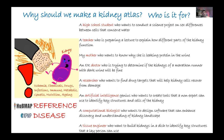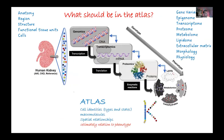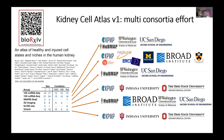In order to understand disease, we need to know the reference. Kidneys are constantly being damaged by what we eat, our genetics, and how we age, so it's important to know changes across the lifespan. The atlas should define anatomy all the way to the cells, with molecules from DNA to metabolites represented, linking genotype to phenotype. We map cell identities, spatial relationships, and ultimately try to relate this to phenotype.